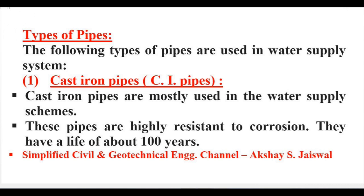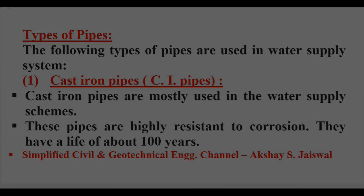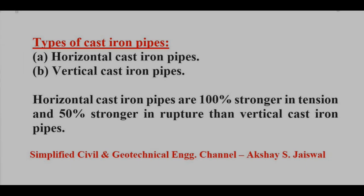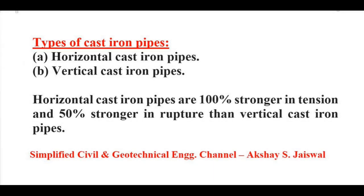The first type is cast iron pipes. Cast iron pipes are mostly used in water supply schemes. These pipes are highly resistant to corrosion and have a life of about 100 years. Types of cast iron pipes are horizontal cast iron pipe and vertical cast iron pipe.